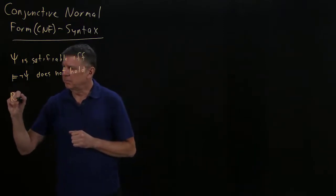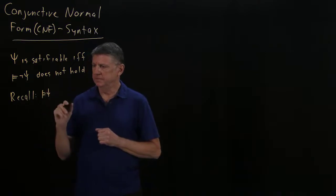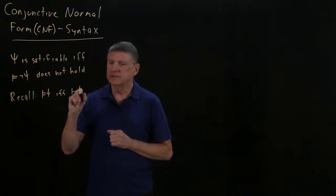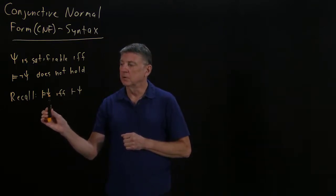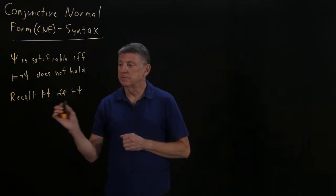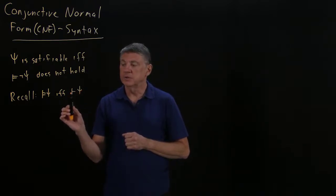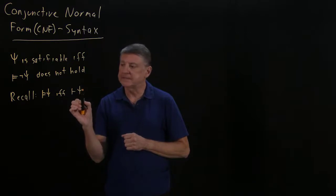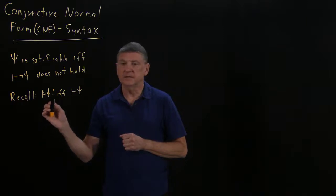An important fact is that a semantic entailment of a formula holds if and only if that formula is a theorem. The semantic statement says something about the truth table—that every row evaluates to true. The syntactic statement says that there exists a proof in natural deduction using no premises whatsoever, and that formula is the conclusion. So if we can address the syntactic question of whether or not something is valid, that answers the question of whether or not it is semantically always true.